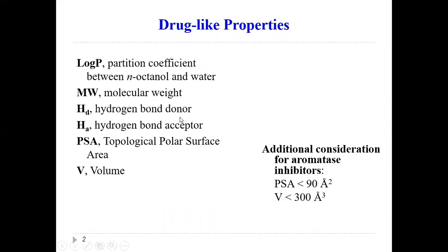There are a couple of big parts of this that we actually care about. There's more than this, but we really care about these six. First is log P — that is the partition coefficient between n-octanol and water. Effectively, that is saying how likely it is for our molecule to be in an organic environment versus an aqueous non-organic environment. The lower this value, the more likely it is that our molecule will prefer to exist in an organic form. N-octanol is a fatty acid chain — that is our organic component. Then we have molecular weight, MW, which is just how large our molecule is.